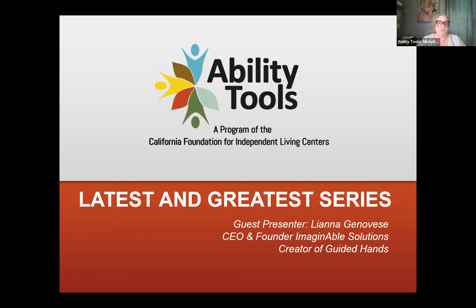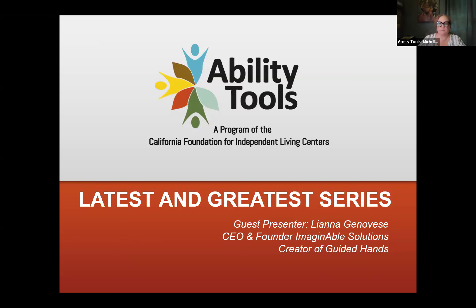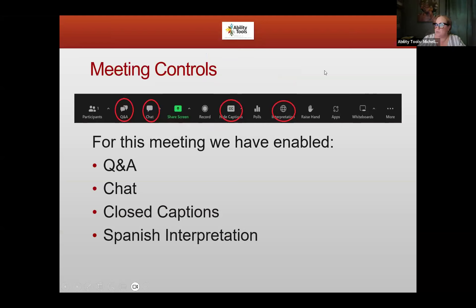My name is Michelle Rosado. I am one of the Ability Tools coordinators here at Ability Tools and CFILC. For audio description purposes, I'm a middle-aged Latino woman with fair skin and curly red hair. I'm wearing glasses and a black and white top and gold hoop earrings. Let's quickly review our accessibility options available for today's meeting — we have a little extra today, which I'm excited to share.